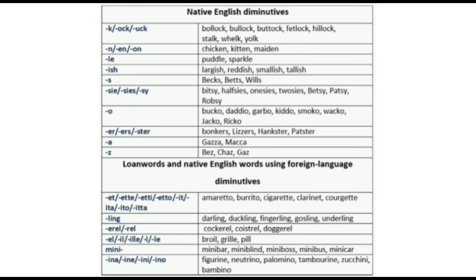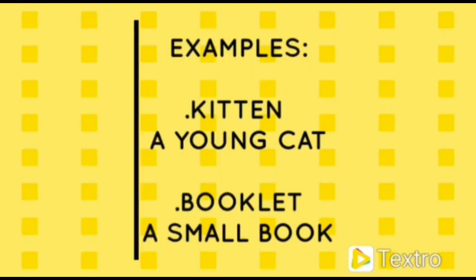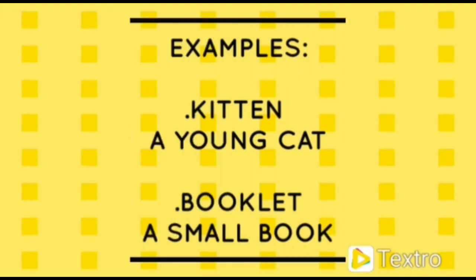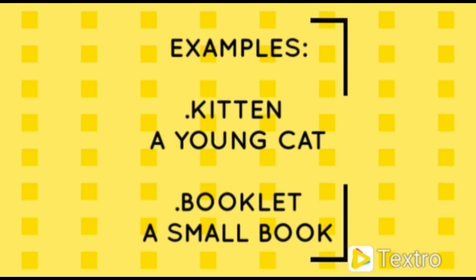Let's check out another example of diminutives. Kitten — a young cat. Booklet — a small book. I hope you understand the concept of diminutives.